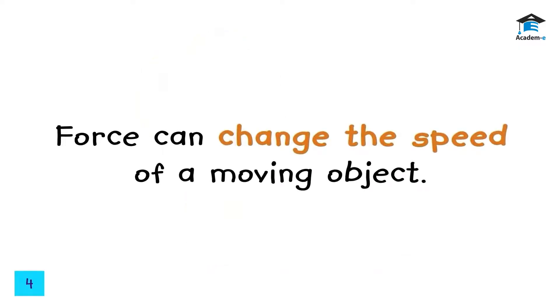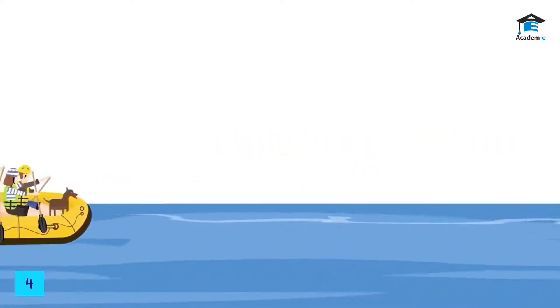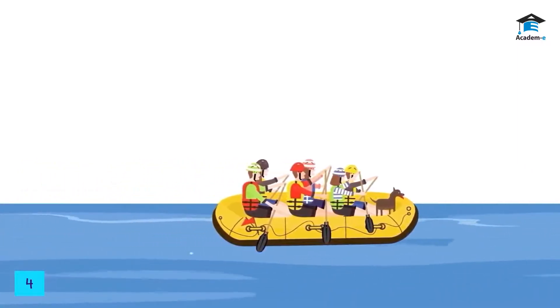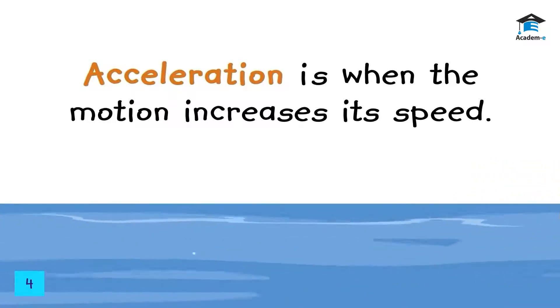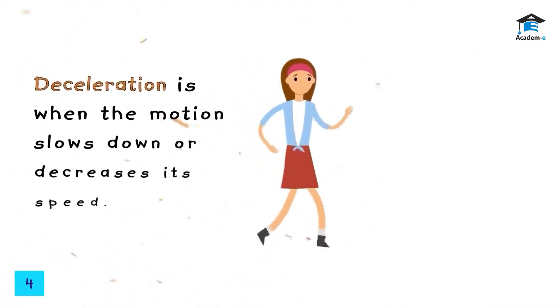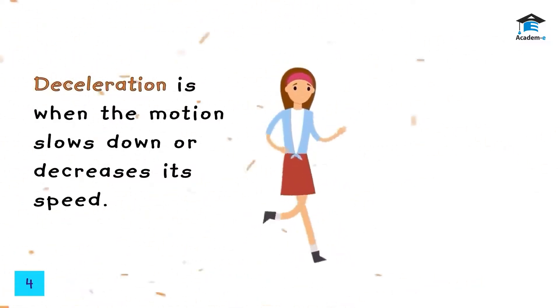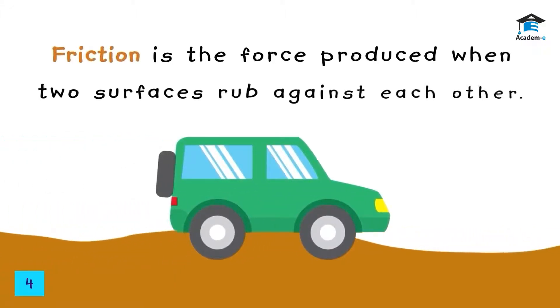Force can make objects move slower or faster. For example, the strong current of flowing water carries a raft forward and makes it move faster on the river. Acceleration is when motion increases in speed. Another example is air moving against a running person, which slows down that person's movement. Deceleration is when motion slows down or decreases in speed.